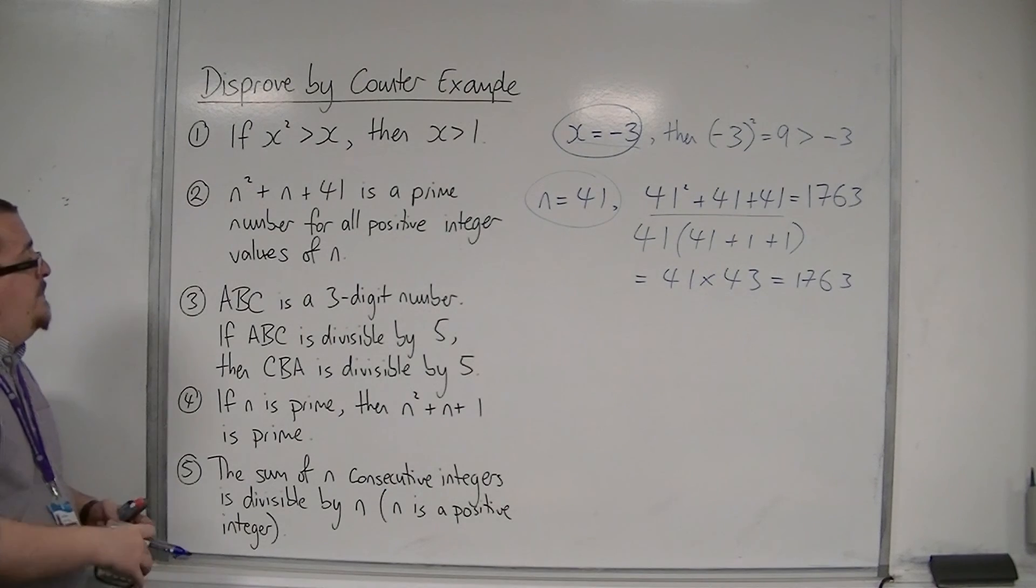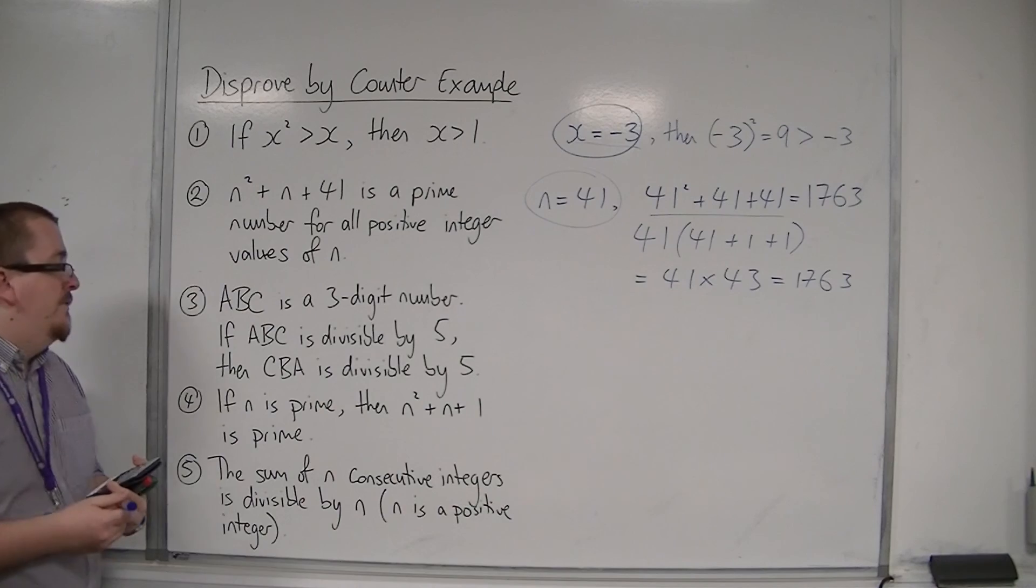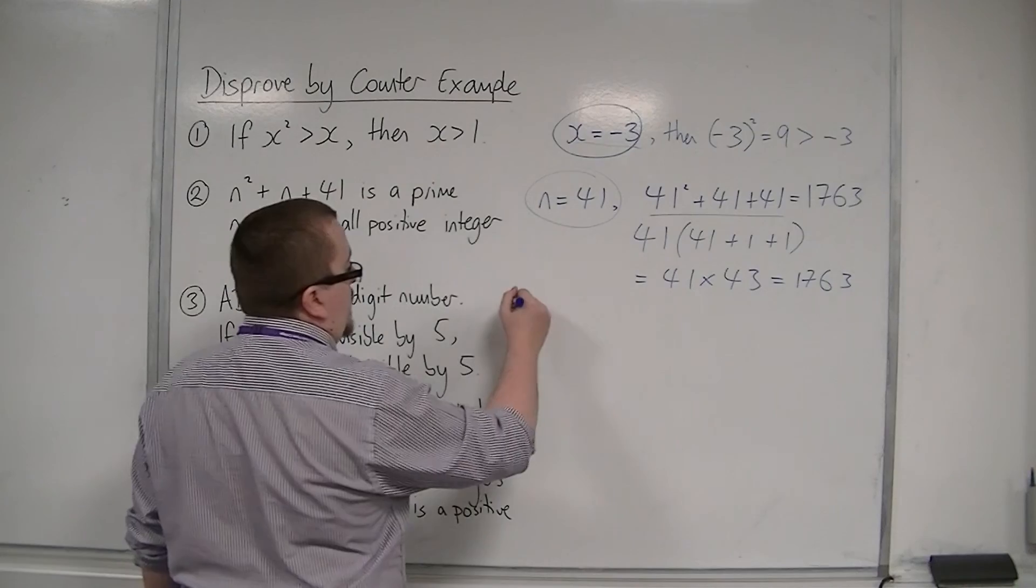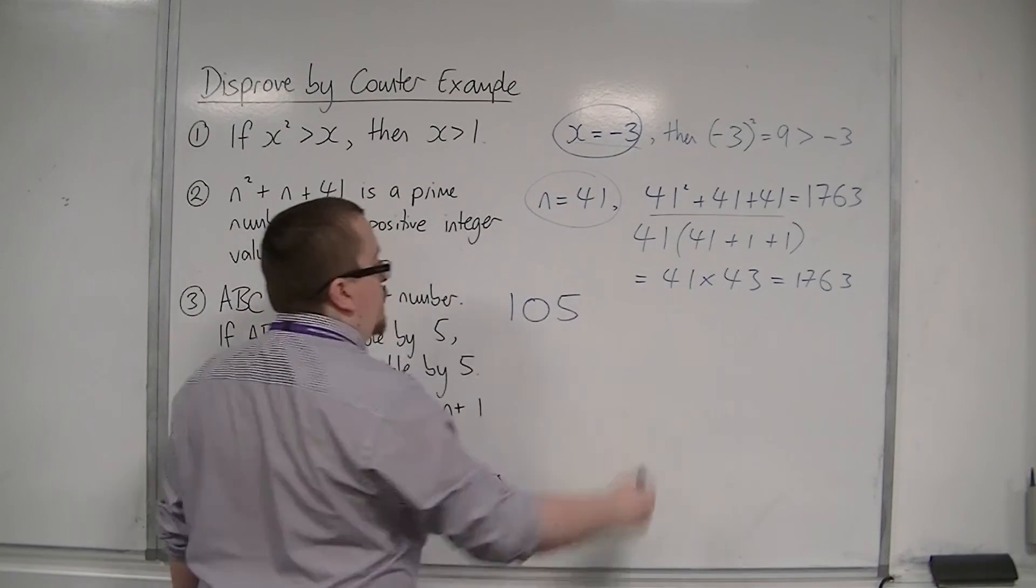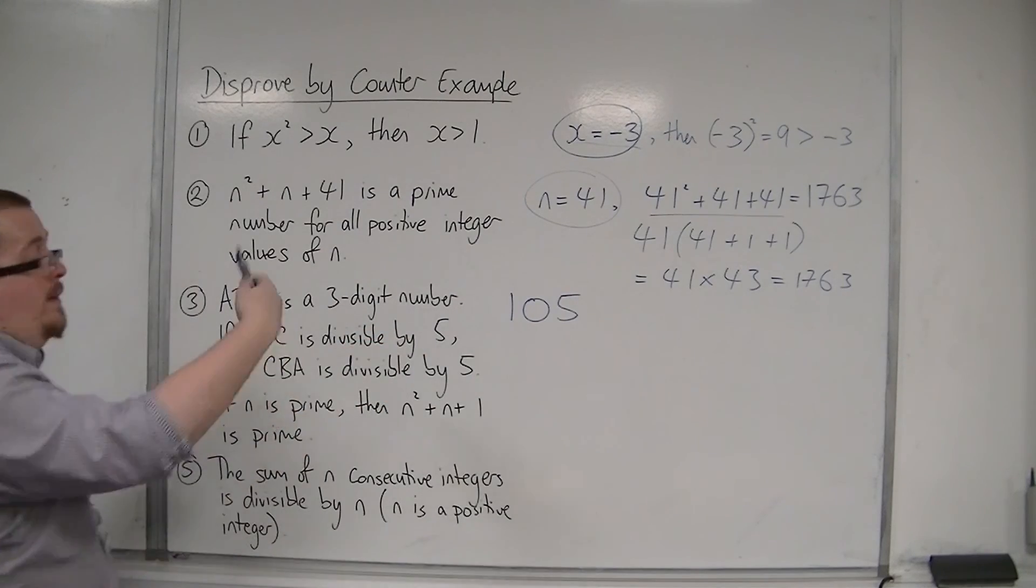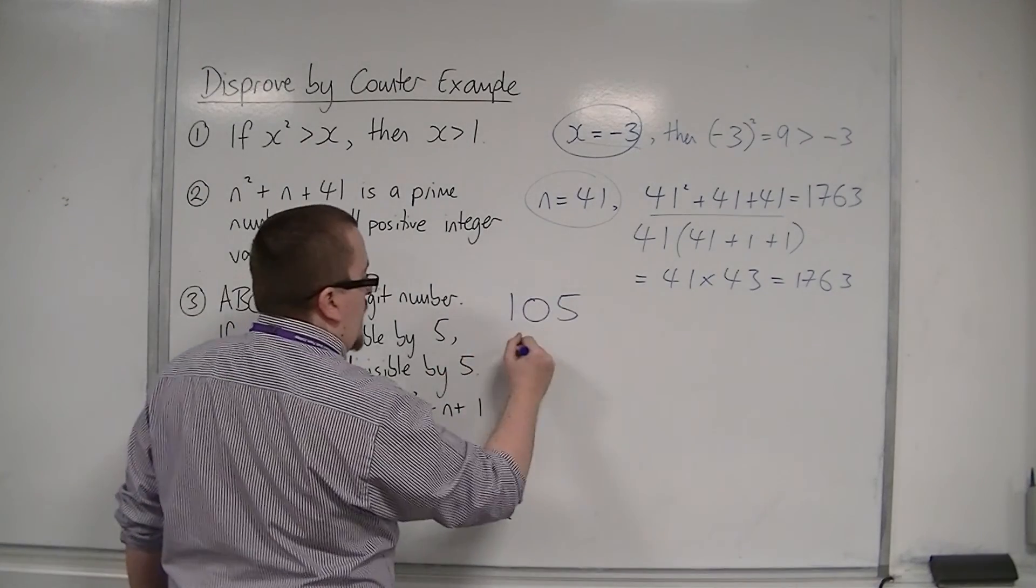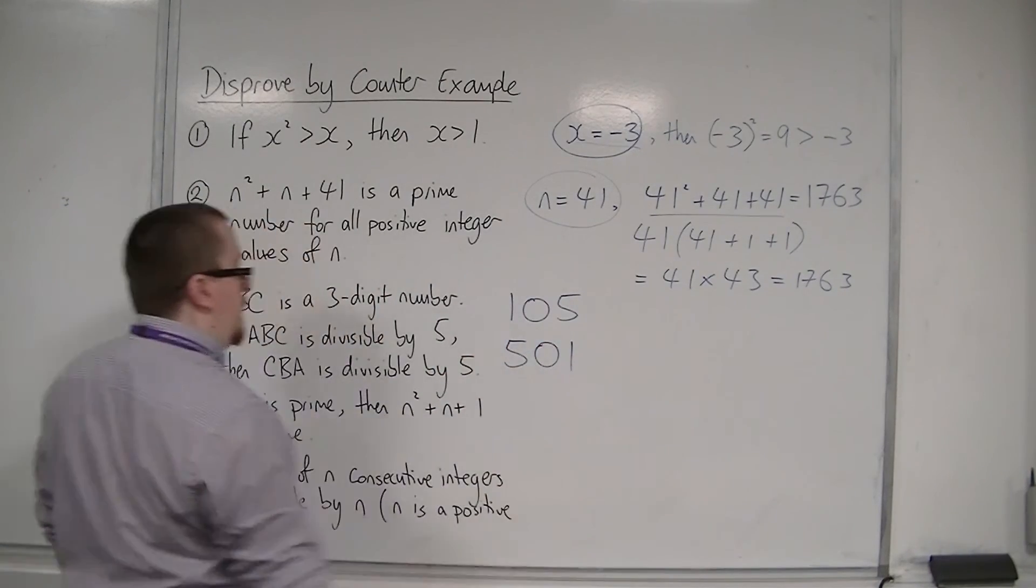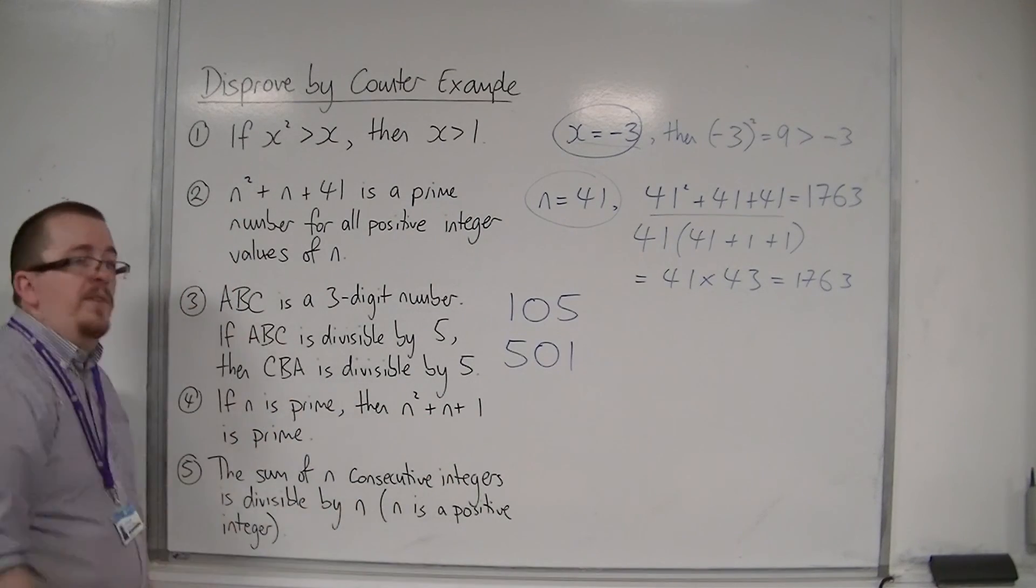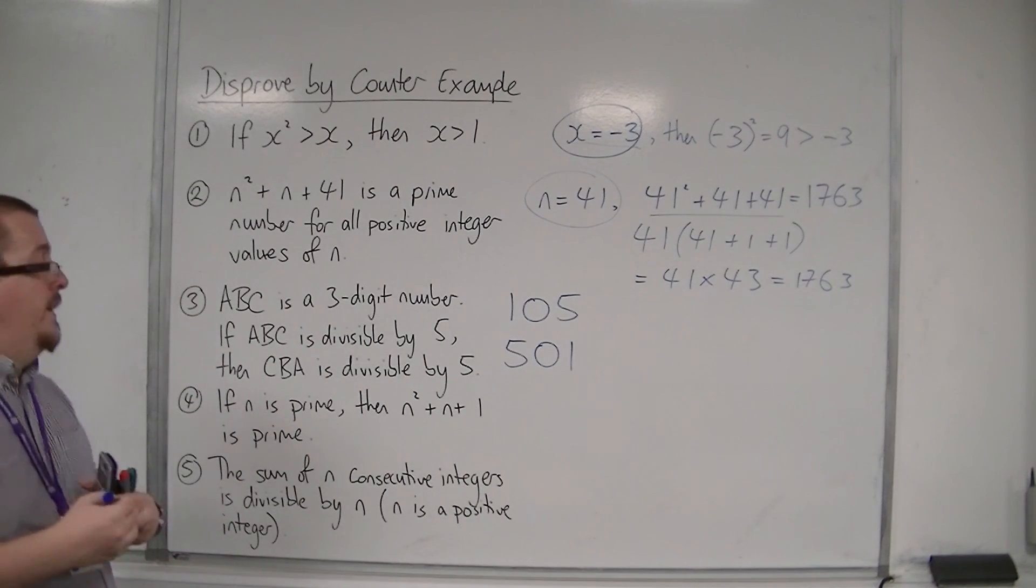Number 3, ABC is a three-digit number. If ABC is divisible by 5, then CBA is divisible by 5 also. So if we chose ABC to be 1, 0, 5, for example, then my A is 1, my B is 0, and my C is 5, then CBA is that number reversed. But 501, that's not divisible by 5, and this statement says that it should be, and so that is an example where number 3 fails.